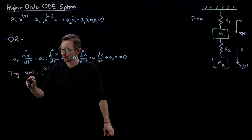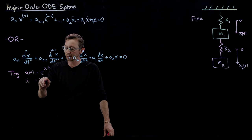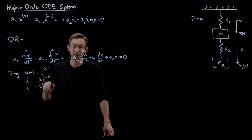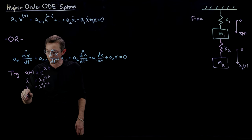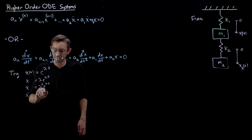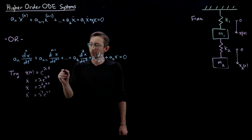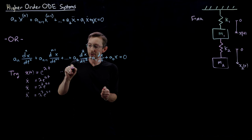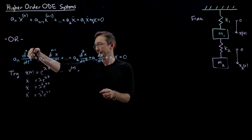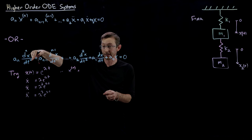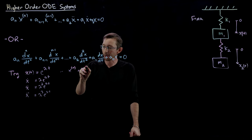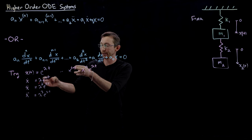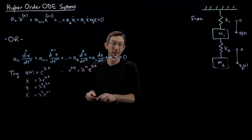We know that x-dot equals λe^(λt), x double-dot equals λ²e^(λt), x triple-dot equals λ³e^(λt). And in general, the nth derivative of x with respect to time is going to be λⁿ e^(λt). This is a very nice pattern: every derivative — the nth derivative — has λ to the power n out front of e^(λt).